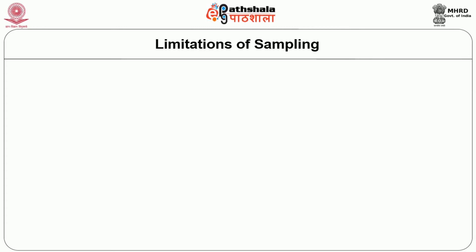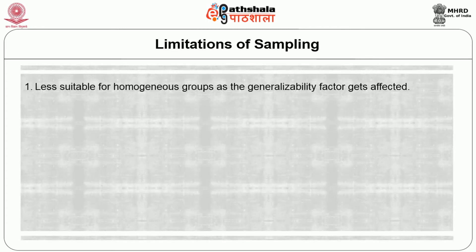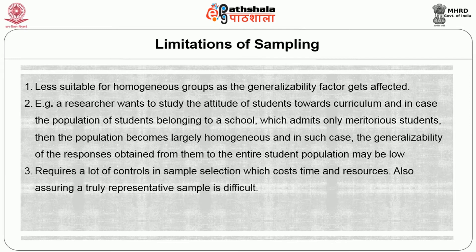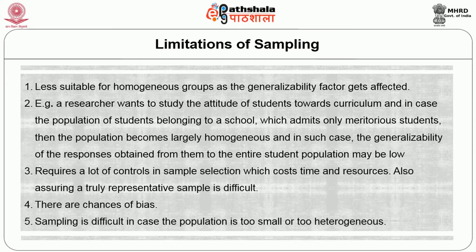There are a few limitations with sampling. It is less suitable for homogeneous groups as the generalizability factor gets affected. For example, a researcher wants to study the attitude of students towards curriculum, and if the population belongs to a school which admits only meritorious students, then the population becomes largely homogeneous and generalizability of the responses may be low. It requires a lot of controls in sample selection, which consumes time and resources. Assuring a truly representative sample is difficult, and there are chances of bias. Sampling is also difficult when the population is too small or too heterogeneous.